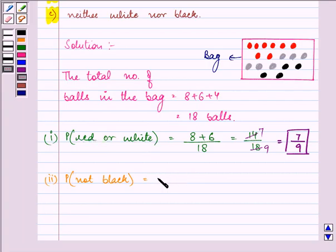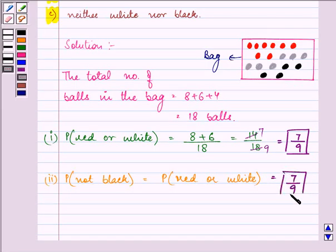So probability of not being black is equal to probability of being a red or a white ball. And that we have found out above as 7 upon 9. So this is the answer to the second part.